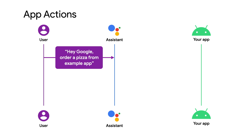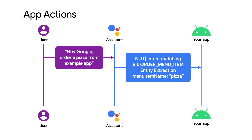Assistant will process the user's input with natural language understanding, matching the request to either a built-in intent or a custom intent, like the Order Menu Item built-in intent. It also does entity extraction to pull out supported parameters, like getting the parameter menu item name from the user's input — which in this case is pizza. Check out our reference docs for the full list of all our supported built-in intents.